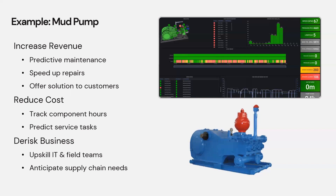In terms of reducing cost, one of the things we do is tracking the operating hours of every component inside the mud pump. This gives you accurate prediction of when components need to be replaced, versus a very conservative estimate based on number of days or months without taking into account actual operating hours — saving quite a bit in component replacement cost. We are also able to tell you, for the next maintenance window, what tasks need to be done, enabling very efficient service within planned maintenance windows and saving significant maintenance cost.